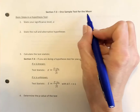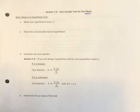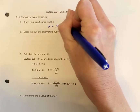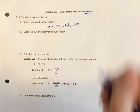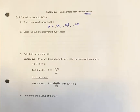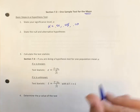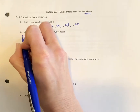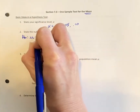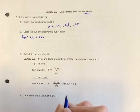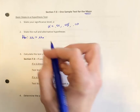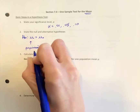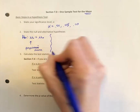The first thing we're going to do is state our significance level alpha. Just like last time, that's typically going to be either 0.01, 0.05, or 0.10. The next thing we're going to do is state our null and alternative hypotheses. This time we're testing a population mean, not a population proportion, so our null hypothesis is going to take the form mu equals mu-sub-zero, for some value mu-sub-zero that we're testing, where mu is our population mean.